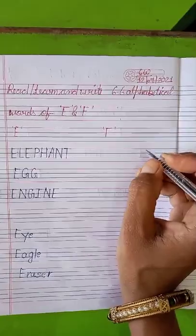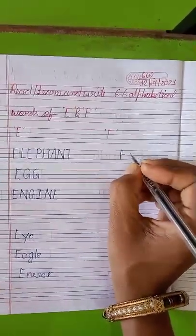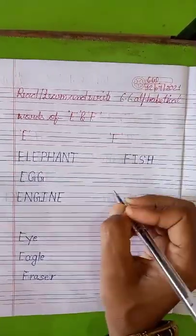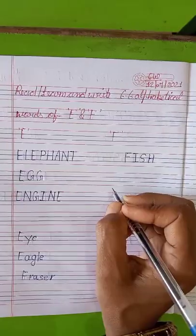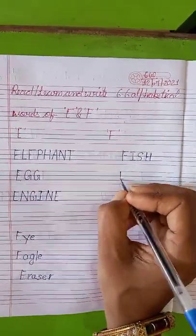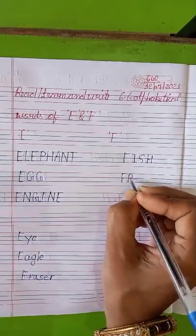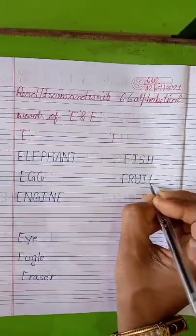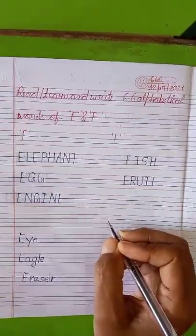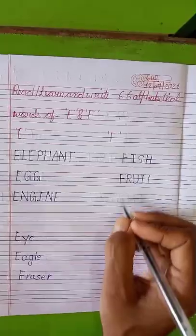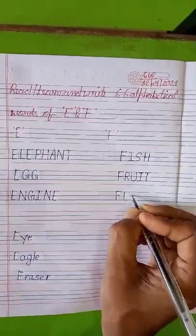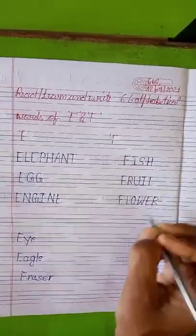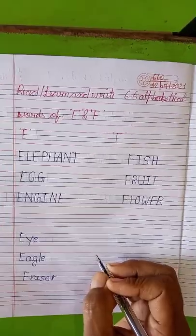3 capital letters and 3 small letters for F. F-I-S-H — Fish. F-R-U-I-T — Fruit. F-L-O-W-E-R — Flower. F-R-O-G — Frog.